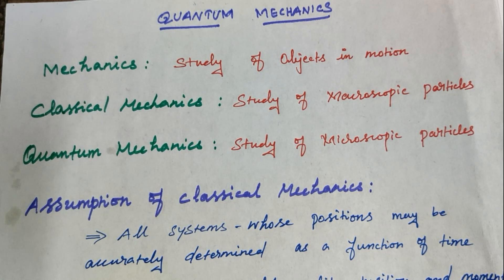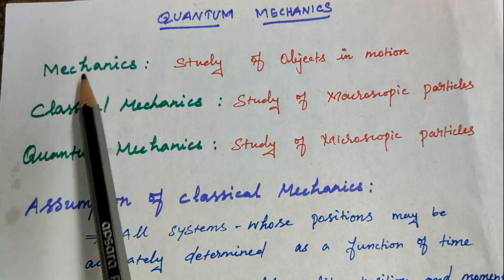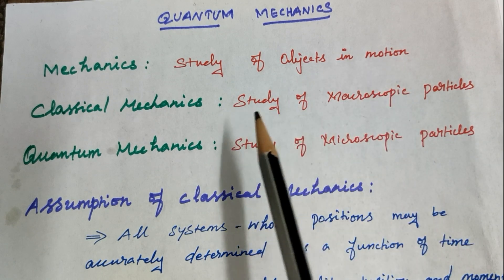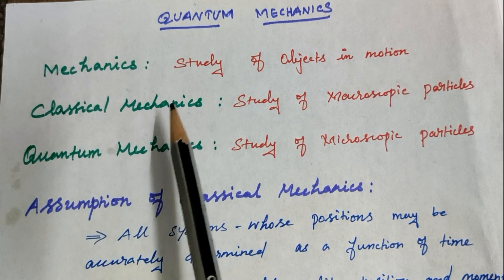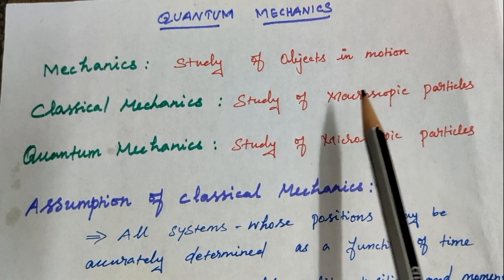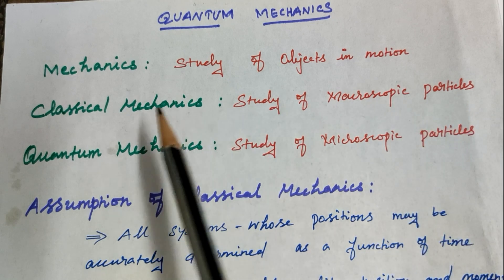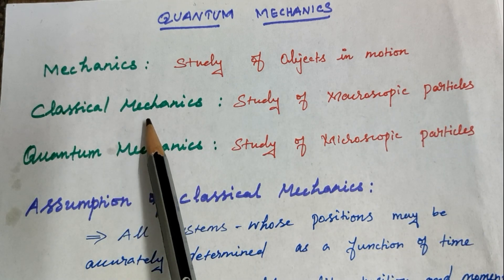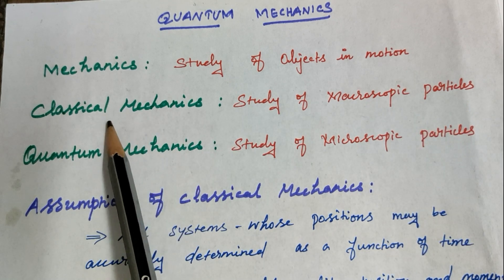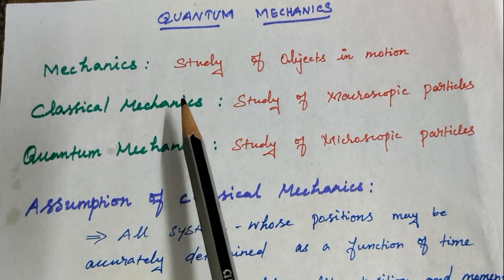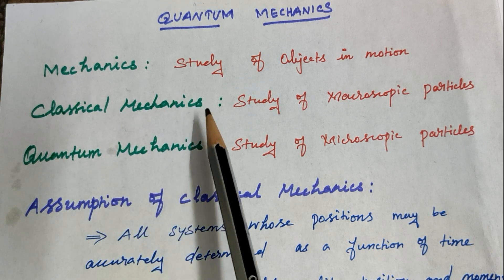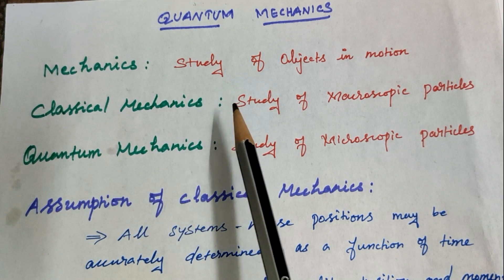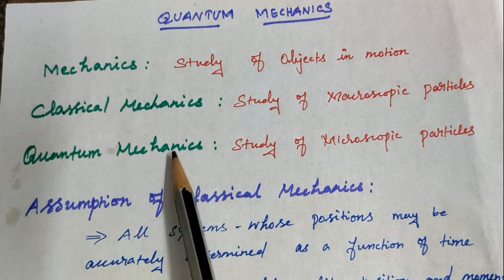Classical mechanics is the study of macroscopic particles. In the 17th century, Sir Isaac Newton formulated classical mechanics, which applies only to large bodies and planets.